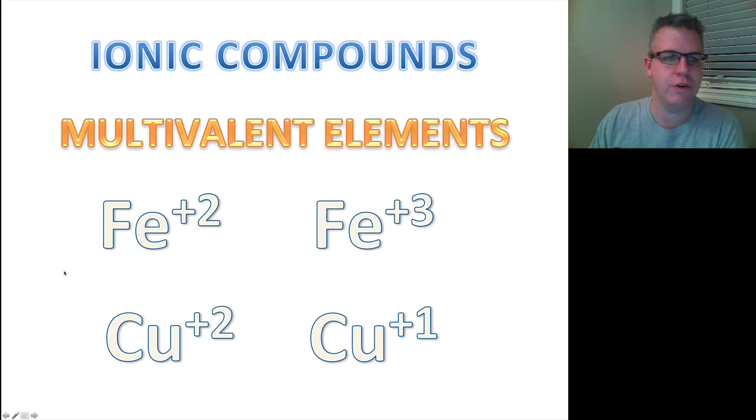First of all, they are elements that can form more than one ion. There are a couple of them here. For instance, iron. Iron can form a Fe+2 ion or a Fe+3 ion. Copper as well can form a Cu+2 ion or a Cu+1 ion.